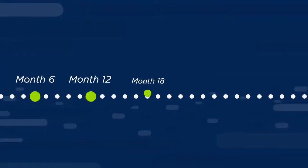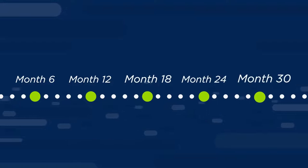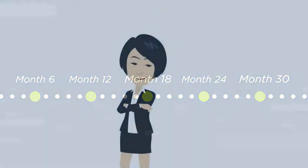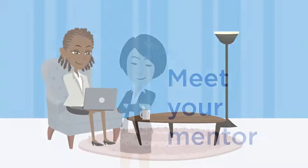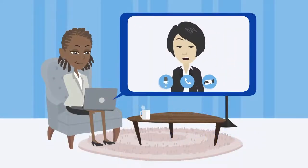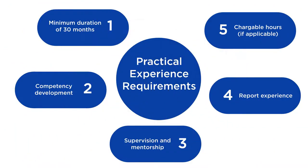Approximately every six months, you must document your current work experience in PERT and meet with your mentor to discuss your progress. You can meet over a coffee or set up a virtual meeting. Follow these steps until you meet your PE requirements.